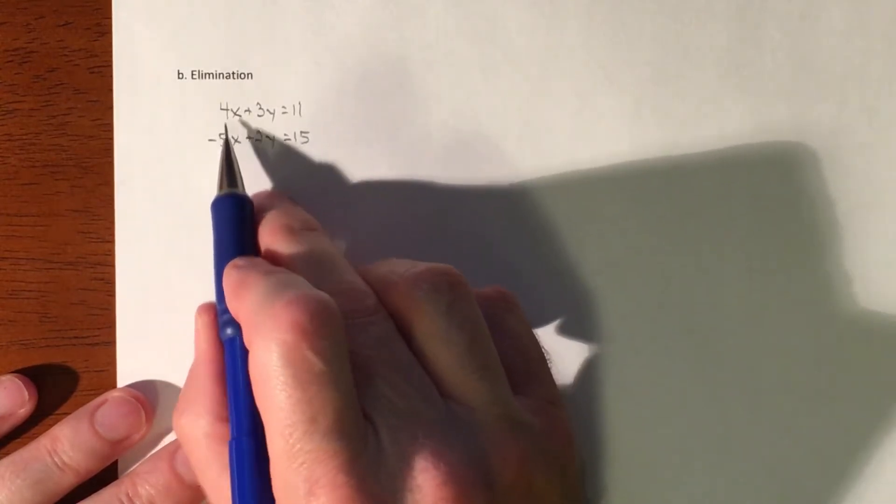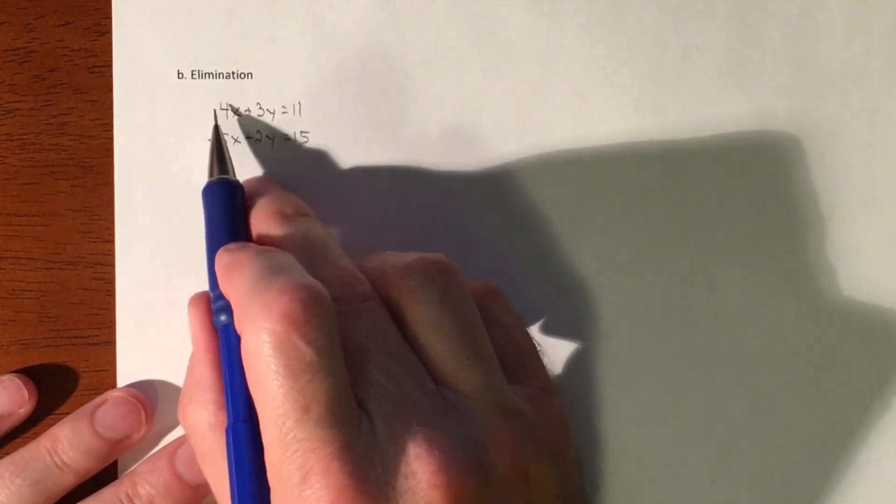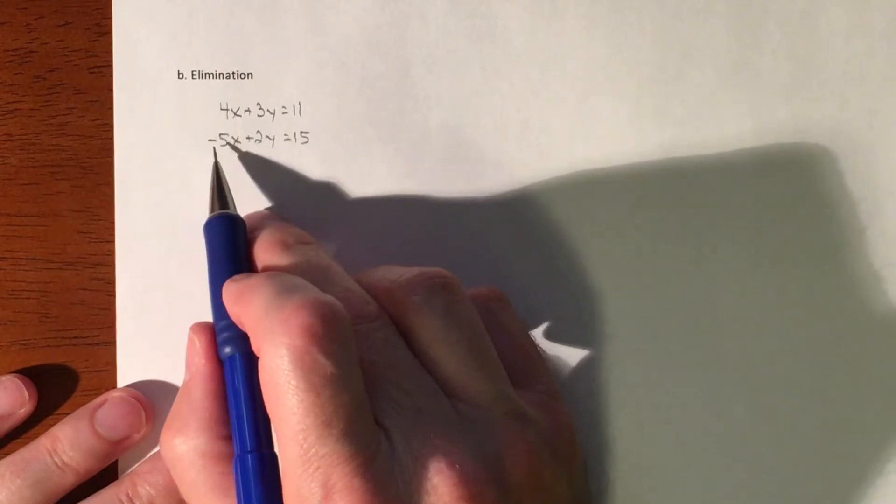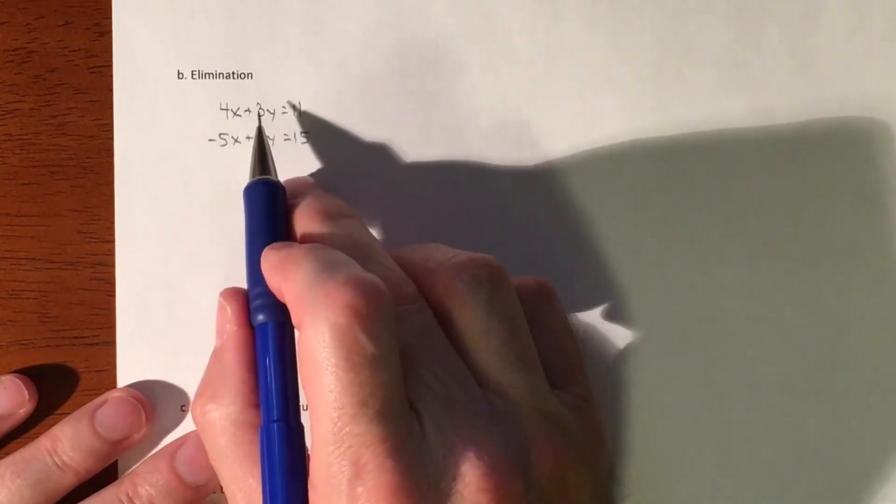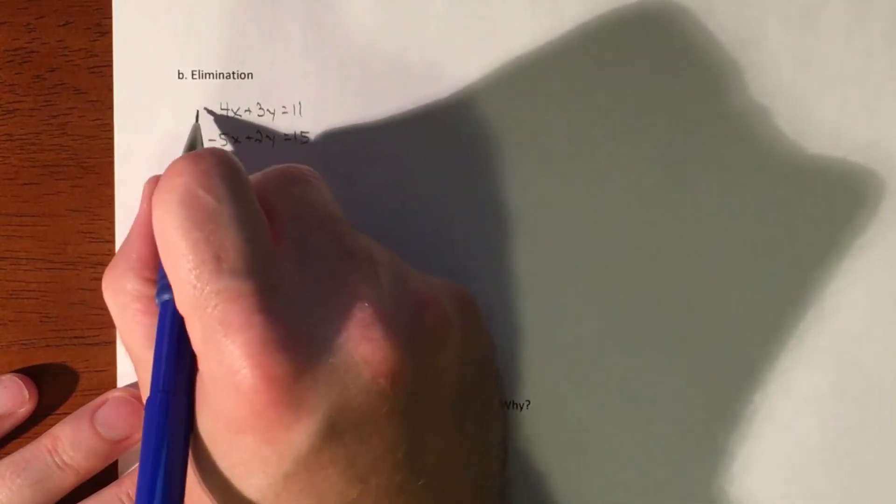So if you're gonna choose the x's, which is not bad because we have a positive and a negative, we don't have to worry about the sign in order to cancel them. But we'd have to make them 20. Or if you did the y's you can make them both become 6. So it doesn't matter. I'm gonna do the y's just to keep things potentially a little bit smaller.